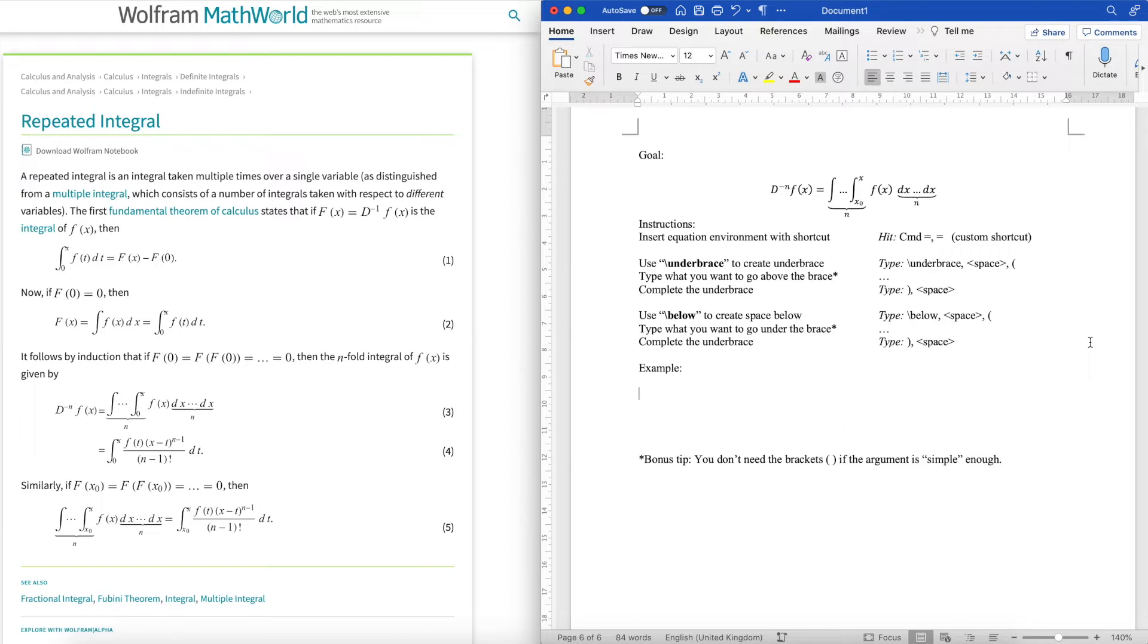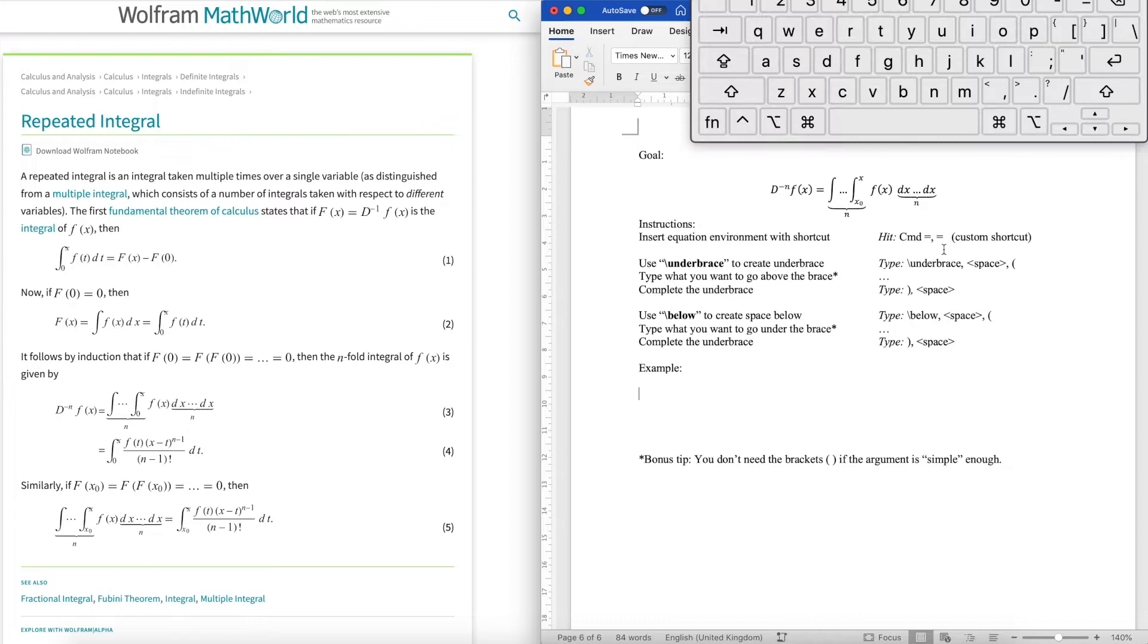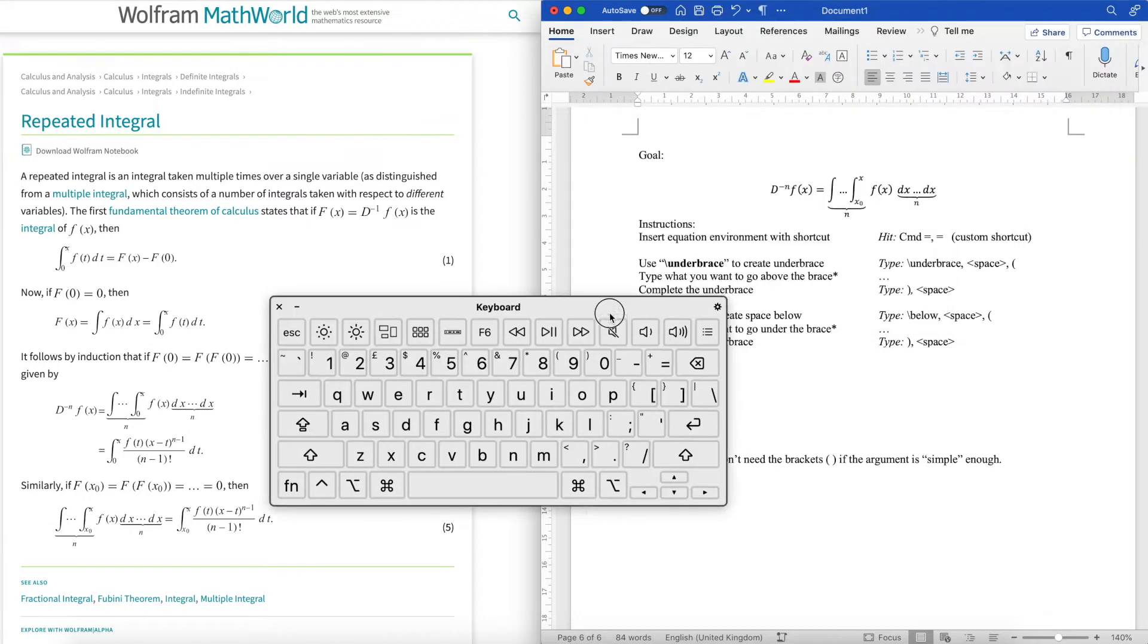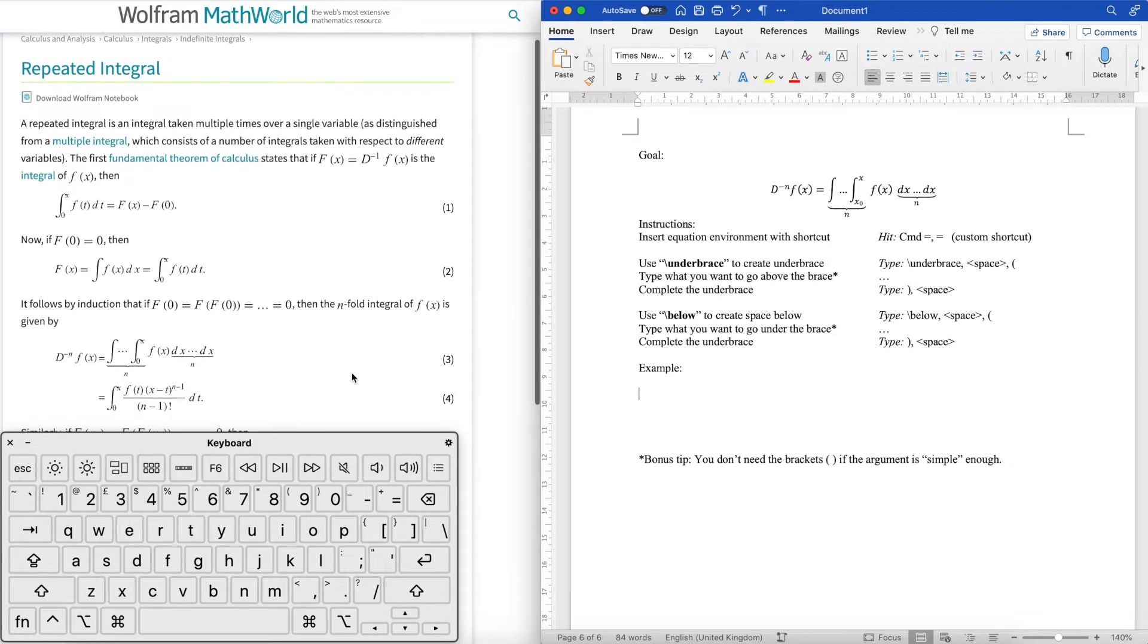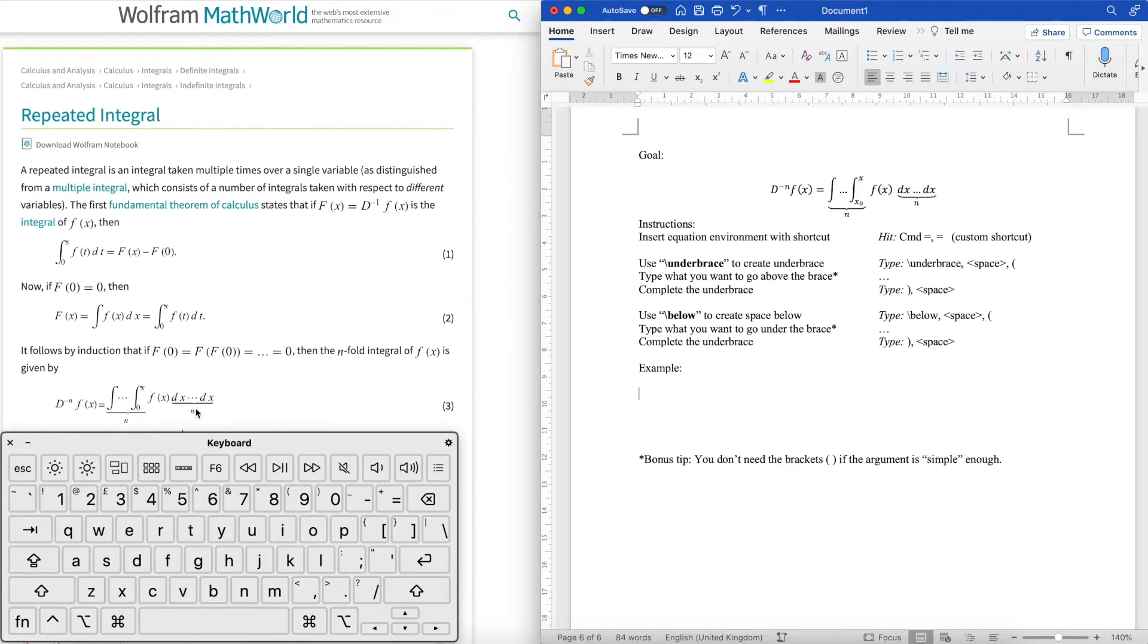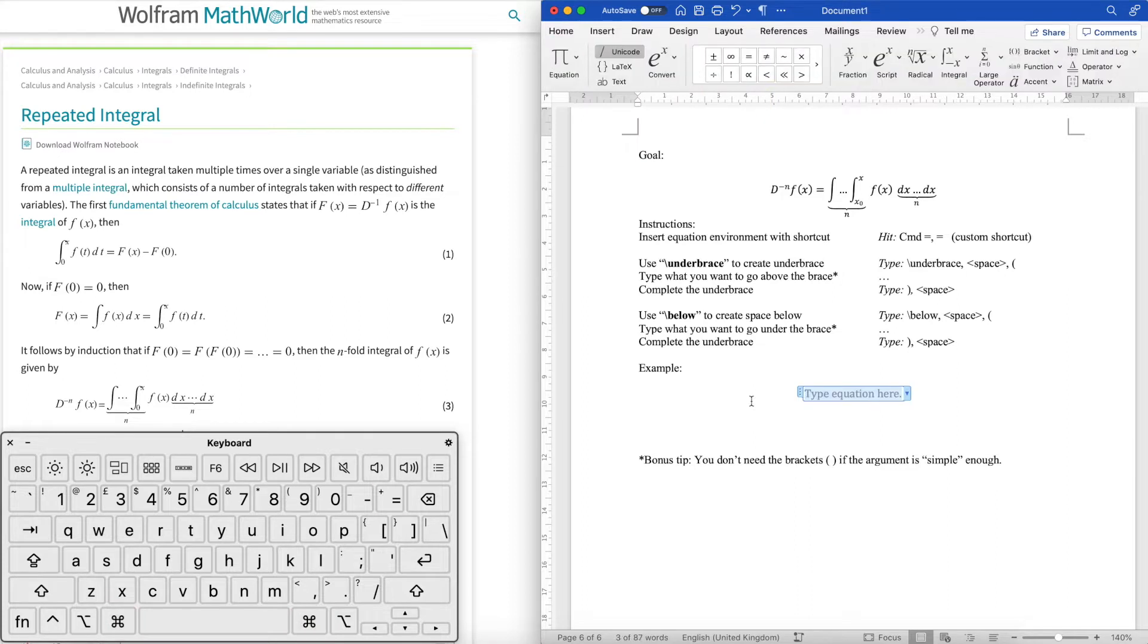First, let's create the equation environment. I use the custom keyboard shortcut of that. So I'll just bring this here. Sorry for that. I'll just put this up here. So this is the equation I want to create. So I do command equal equal. That gives me the equation. Then let me just type this left-hand side out.